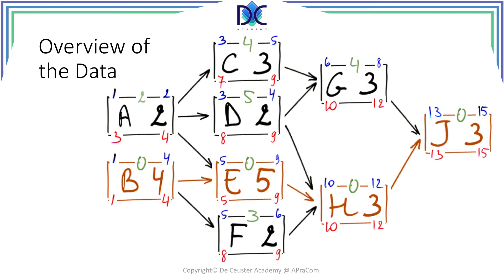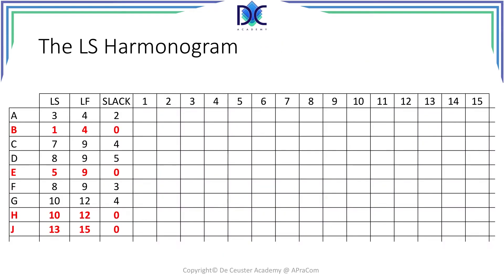We have the same exercise, but now we will concentrate on the red numbers — the late start information. Here is the basic information and the harmonogram, or Gantt chart, that we have to fill in.